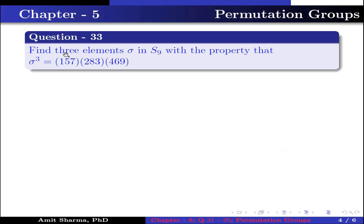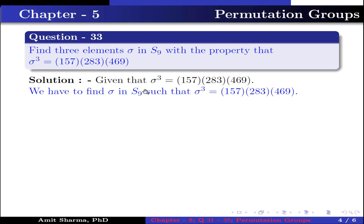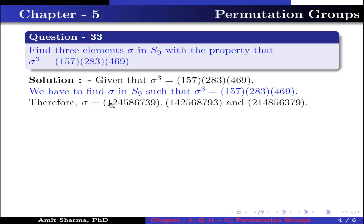Question number 33: Find 3 elements sigma in S9 such that sigma cubed equals the permutation (1, 5, 7, 2, 8, 3, 4, 6, 9). These three permutations are: (1, 2, 4, 5, 8, 6, 7, 3, 9), (1, 4, 2, 5, 6, 8, 7, 9, 3), and (2, 1, 4, 8, 5, 6, 3, 7, 9).